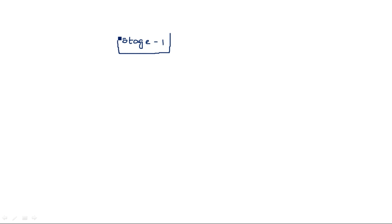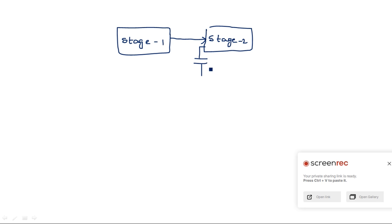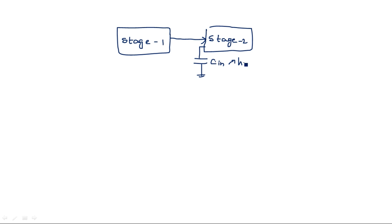Consider stage 1 and stage 2 — two logic circuits both made up of CMOS logic. The output of stage 1 is connected as input to stage 2. Assume that stage 2 has some input capacitance, which is a higher value. This input capacitance of stage 2 acts as the load capacitance for stage 1, because the circuit that drives the next stage acts as the load for the previous stage.